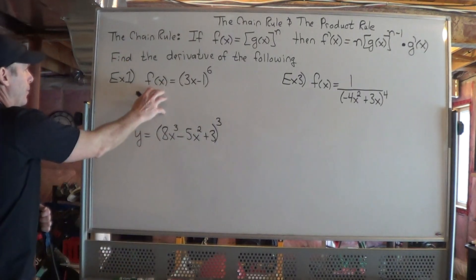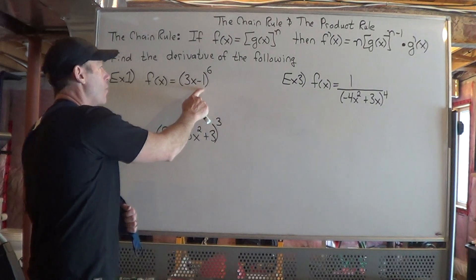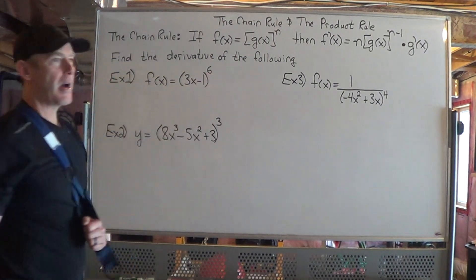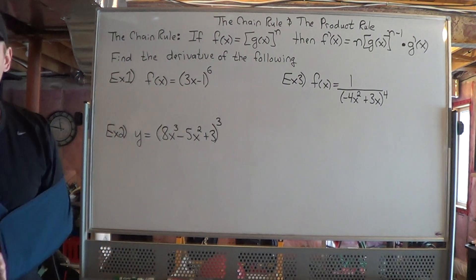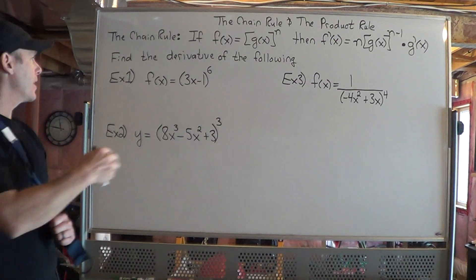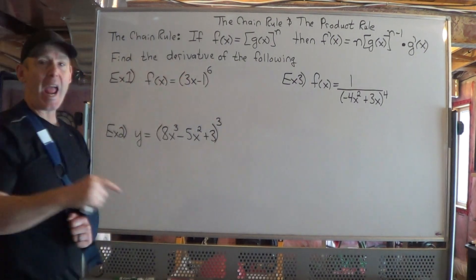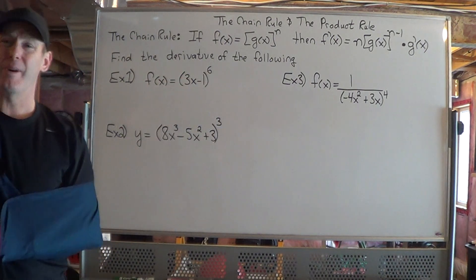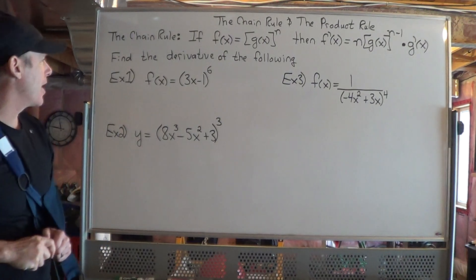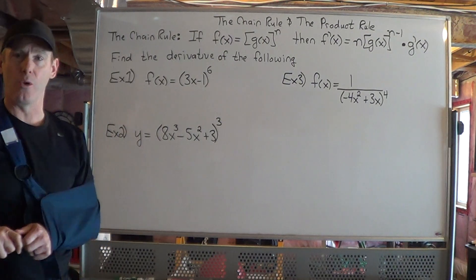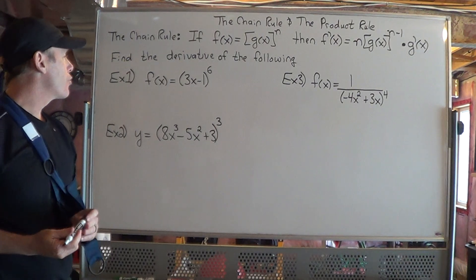For example, f of x is equal to 3x minus 1 to the power of 6. I could use our old rule, but it would take some time because I would have to take 3x minus 1 and multiply it by itself six times. That's a lot of algebraic manipulation. Or I could use the chain rule.